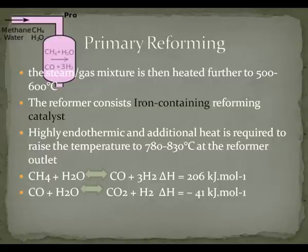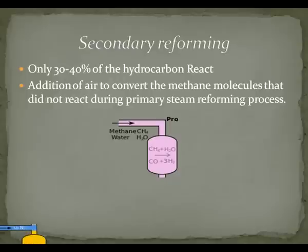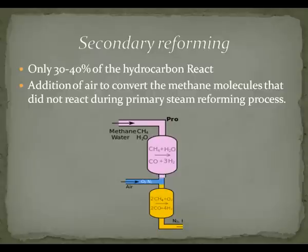Part of industrial production now takes place with a ruthenium rather than an iron catalyst, because this more active catalyst allows reduced operating pressures. Moving on to the secondary reformer: only 30 to 40% of the hydrocarbons react in the primary reformer, so the secondary reformer is needed to blend the rest of the unreacted hydrocarbons with air for additional yield of hydrogen gas.